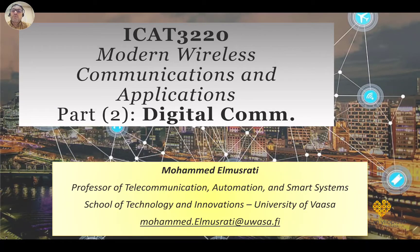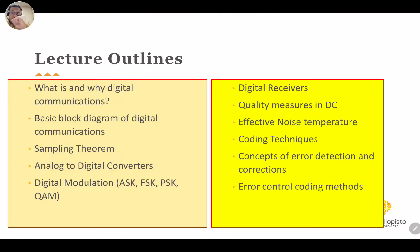Hello everybody, welcome to part two of this course on modern wireless communication and applications. This is clip one of part two. The topics we will cover in this part, divided into four or five clips, include: what is and why digital communication, basic block diagrams of digital communications, sampling theorem, analog-to-digital converters, digital modulations, digital receivers, quality measures in digital communication, and effective noise temperature.